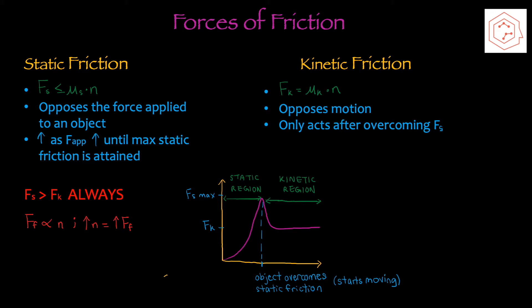If you look at the bottom here, you'll see a graph of static friction versus kinetic friction. The static friction increases as the applied force increases until the max static friction is attained, in which case it switches over to kinetic friction, which is lower than the max static friction. This is divided into the static region — before the object begins to move — and the kinetic region, which is after the object starts moving.